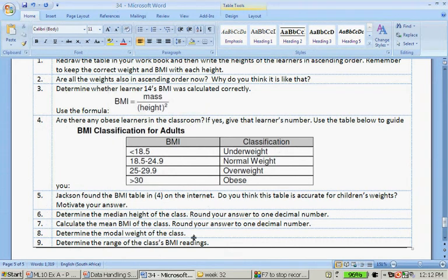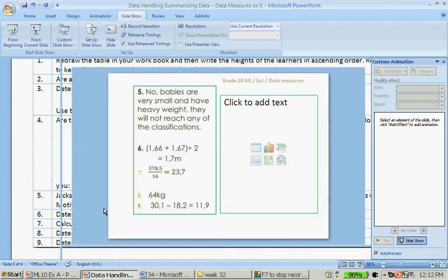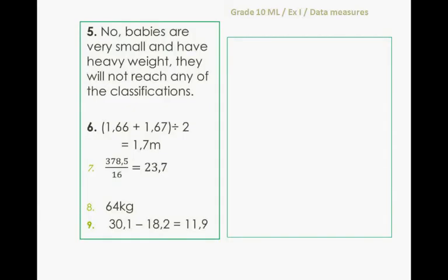Determine the modal weight, the mode of the weight, and the range. So the modal weight, the one that occurs most often, is 64 kilograms. And the range of the BMI's is 30.1 minus 18.2, which is 11.9.